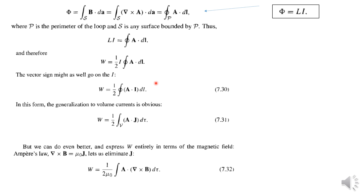This is a line integral. The current flows along the line. We can generalize from a line current to a volume current density J. The volume current density J equals I divided by the perpendicular area element dA. The closed line integral then becomes a volume integral. So the equation becomes W equals half times the volume integral of A dot J dτ.